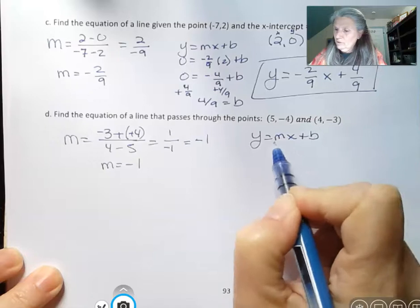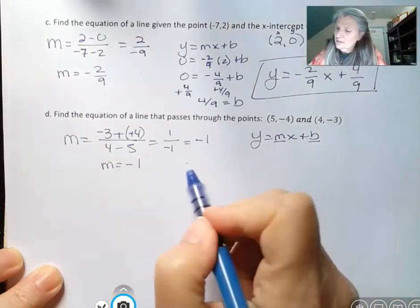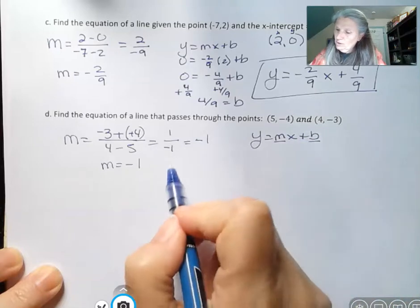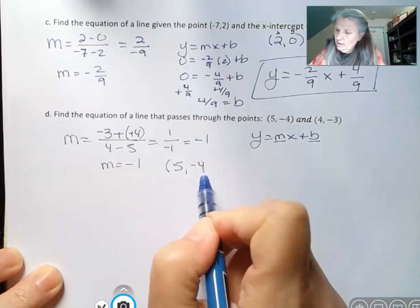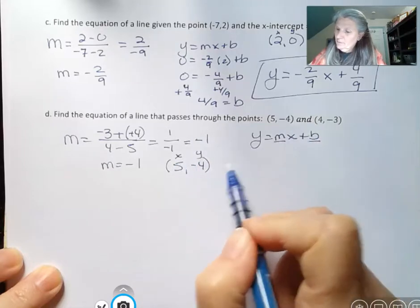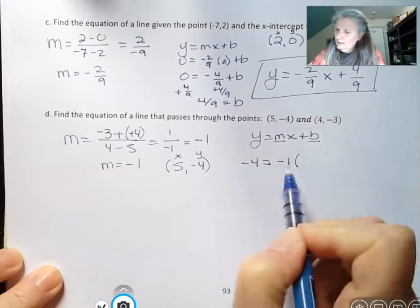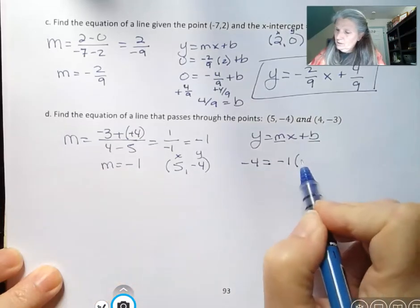Remember, I have y equals mx plus b. I want to find m and b. I just found m. Now I'm going to go back and pick one of those points. Doesn't matter which one you pick. Let's pick this one. We have x and y. And then I'll say the y is negative 4, the m was negative 1, x was 5.